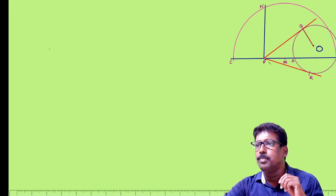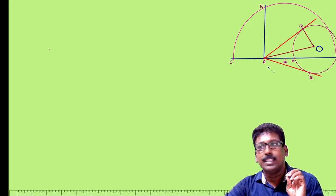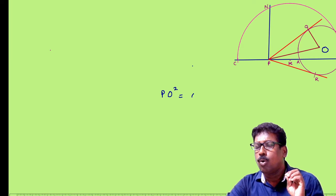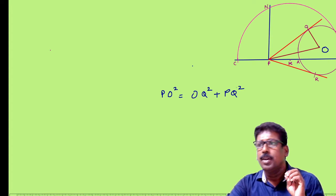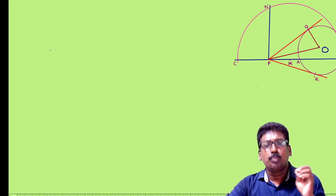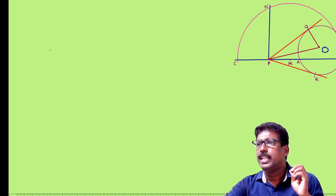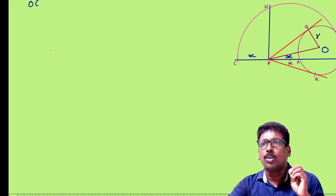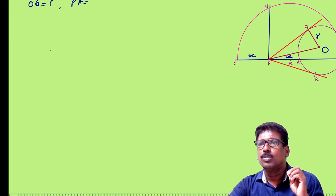For that, join PO. You will get triangle PQO. If you can prove PO² = OQ² + PQ² by converse of Pythagoras, then angle OQP is a right angle. For proving this, let me take the radius OQ as R. And the length PA, let me take it as X. So PC is also X. That is OQ = R and PA = PC = X.